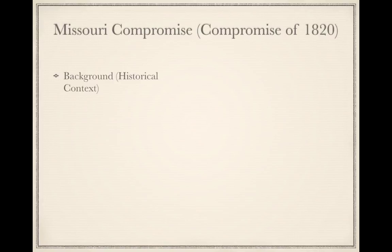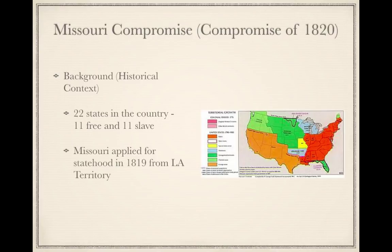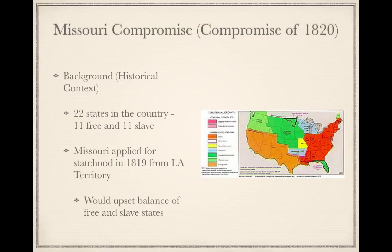For historical context on this compromise, there are 22 states in the country — 11 are free and 11 are slave, so there is a balance between free and slave states. Missouri, pictured here in yellow, is going to apply for statehood in 1819 from the Louisiana Territory — purchased in 1803 by Thomas Jefferson — as a slave state, which would upset that balance. The region opposed to this is the North, because they would be outnumbered in the Senate.